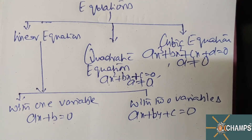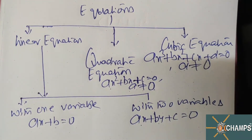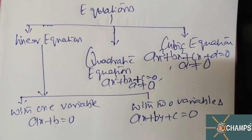Exercise one a, two a to two e is linear equation. Two f, two g, two h is quadratic equation. Two i is cubic equation. Then we have a separate discussion on matrices — that is matrix algebra. Now let us first go to linear equation.